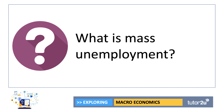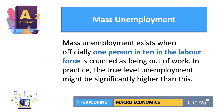We're going to be thinking about mass unemployment. Is there a hard and fast definition of this? Probably not, but officially it's when at least one person in ten in the labour market is out of work. In practice, the true level of unemployment is often significantly higher than this because of lots of hidden unemployment in the economy.